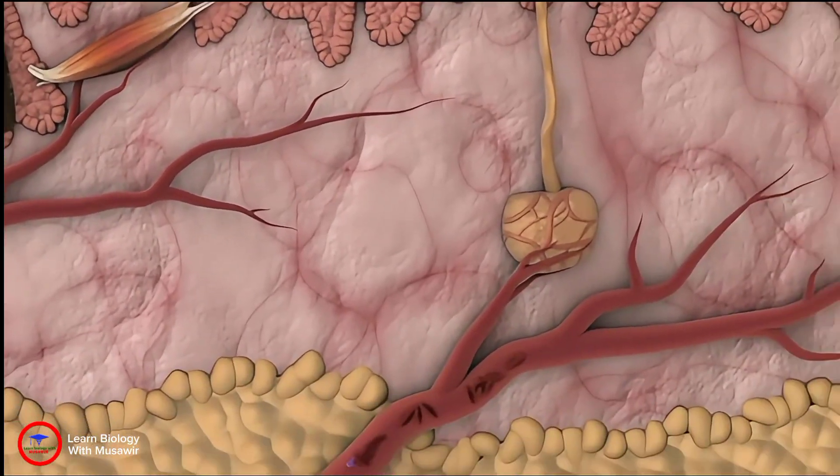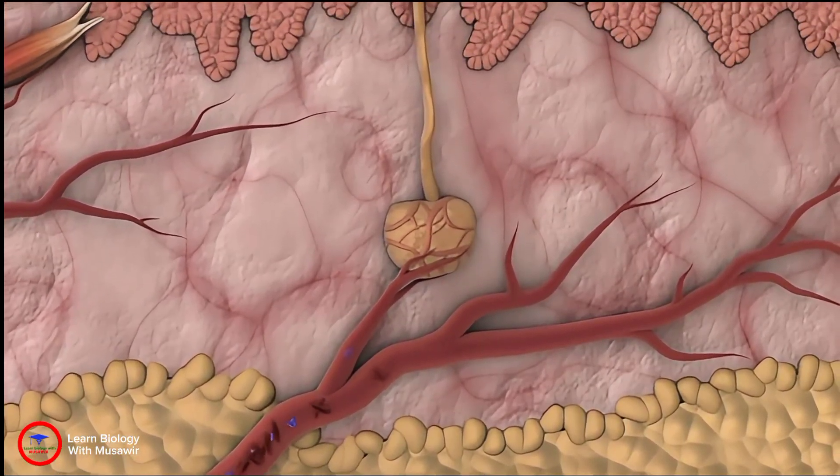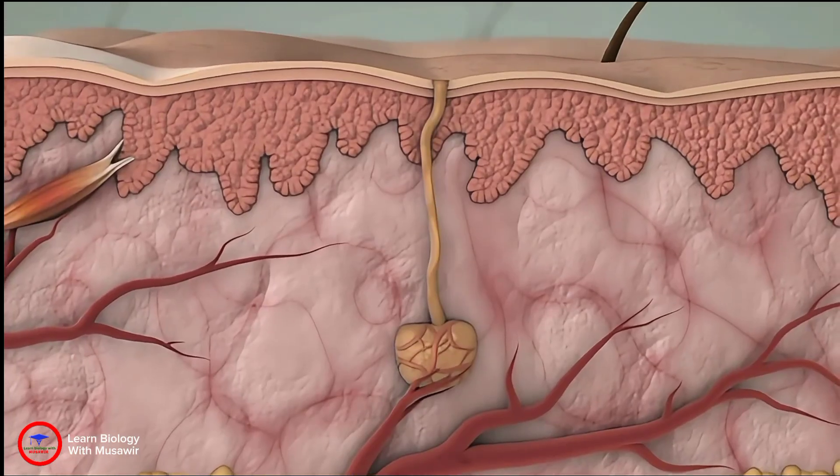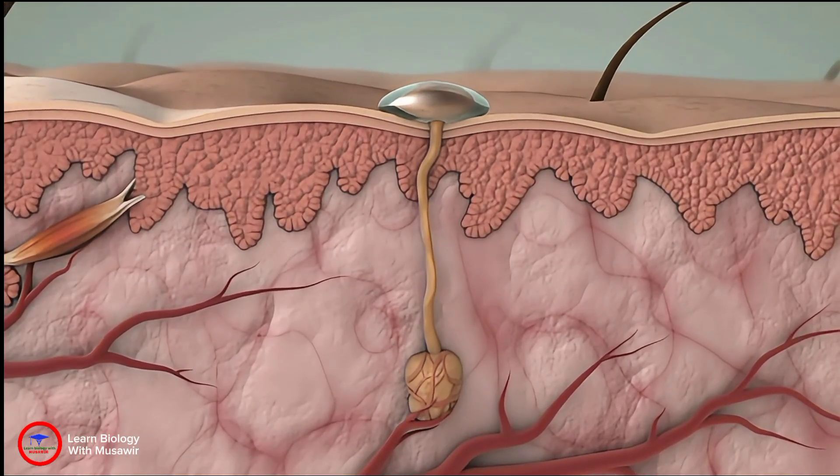The signal also docks on cells wrapped around a sweat gland, which contract too, squeezing sweat onto the skin surface.